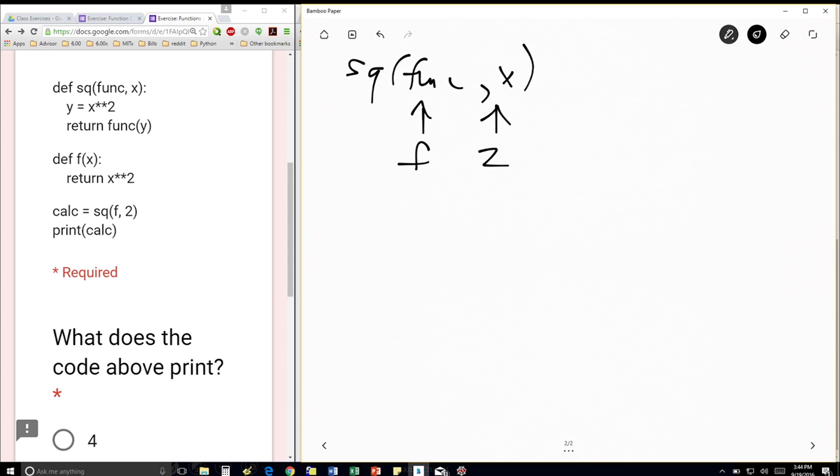So first thing the function does, sq, is create this variable y is equal to x squared. So we're going to have y is equal to 4. And then we're going to return func y. So func of y, this is going to be, we're just replacing the parameters, f of 4, right?